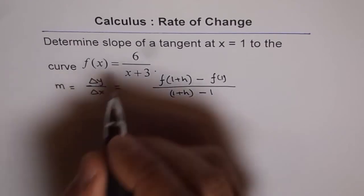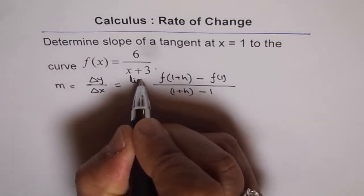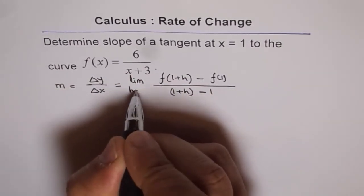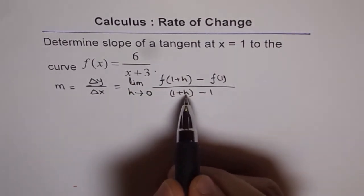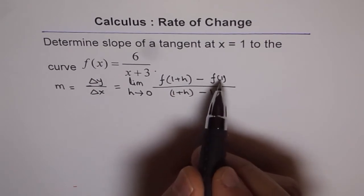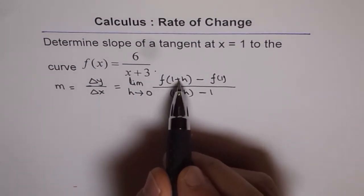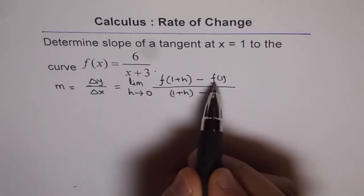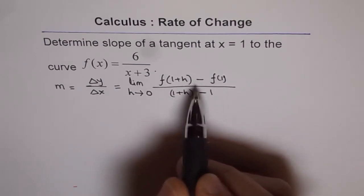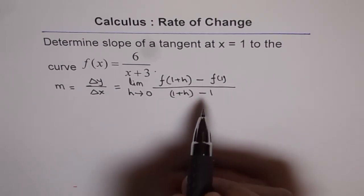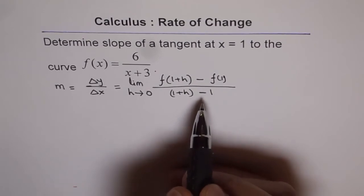So, we write like this, limit h approaches 0. Now, when we say this h is very, very small, then 1 and this is like 1.00001, right? So, they are very, very close. In that case, the slope of the secant will be same or will approach the slope of the tangent.